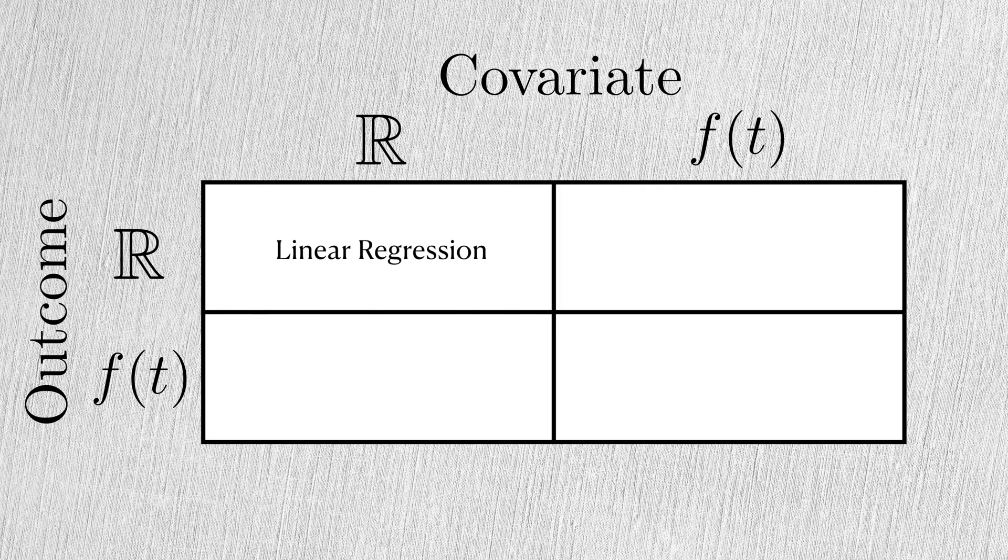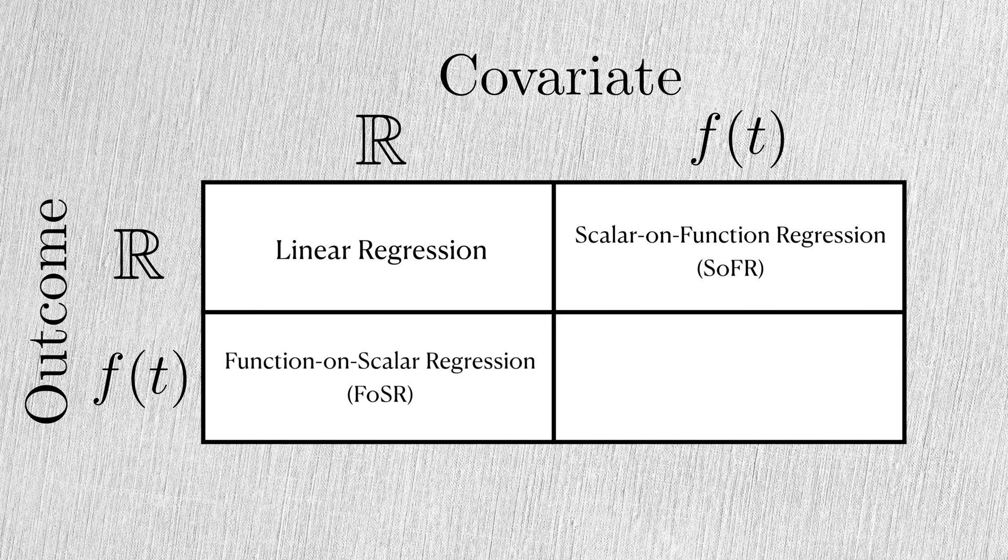When the covariate is a function and the outcome is scalar, we get what's called scalar-on-function regression. When this relationship is flipped, we get function-on-scalar regression. And finally, when they're both functions, we get function-on-function regression. The idea of having a functional covariate or outcome might feel crazy, so let's have a closer look at each model and see an example from the literature.